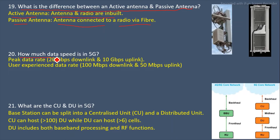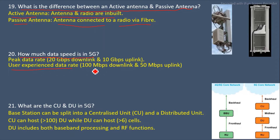Next question: How much data speed is in 5G? The peak data rate in 5G is 20 Gbps in the downlink and 10 Gbps in the uplink theoretically. As per user experience, the practical data rate is 100 Mbps in the downlink and 50 Mbps in the uplink.